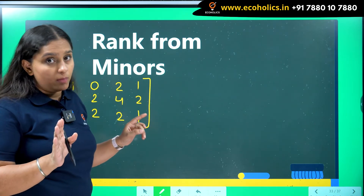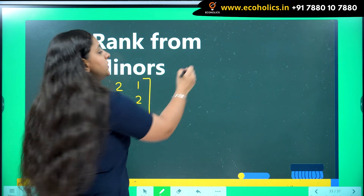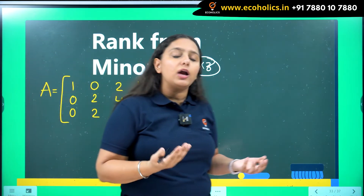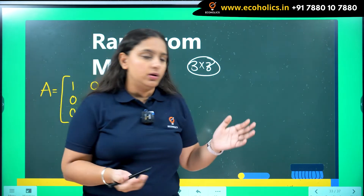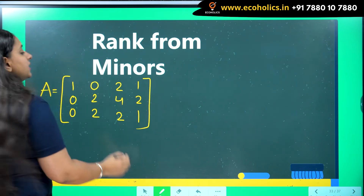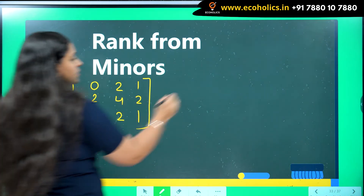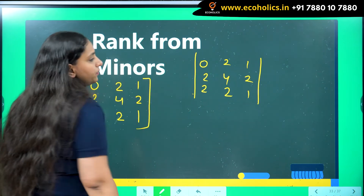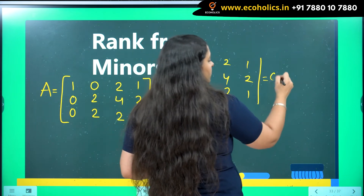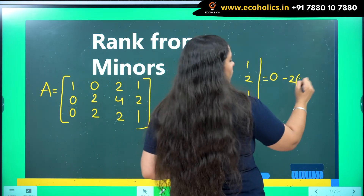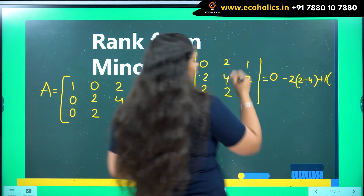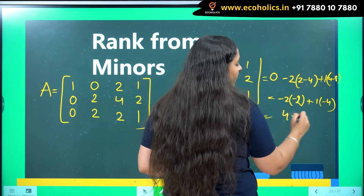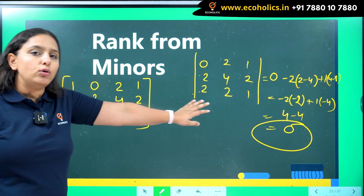Consider this example of a 3×4 rectangular matrix. The determinant cannot be the largest order minor, so the largest order possible is 3×3. I leave the first column and work with the remaining three columns — elements 0, 2, 2; 2, 4, 2; 1, 2, 1. Finding the determinant: 0(4−4) − 2(2−2) + 2(4−4) = 0 − 0 + 0 = 0. So this 3×3 minor is zero.